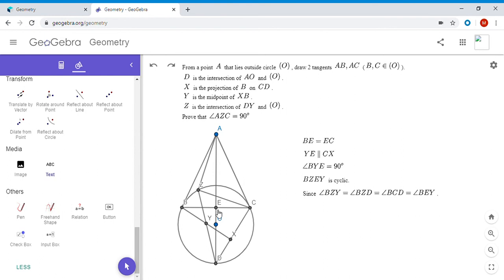Now since BZEY is cyclic, we knew that angle BYE is 90 degrees, so angle BZE has to be 180 minus that, since in a cyclic quadrilateral the opposite angles always add up to 180 degrees. So BZE is also a right angle.